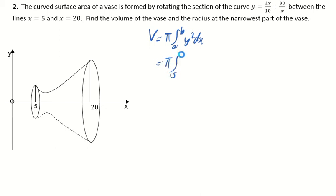that's going to be pi times the integral between 5 and 20 of, and then we've got to square this out. This is the bit that's going to be a bit annoying here. Square this out.